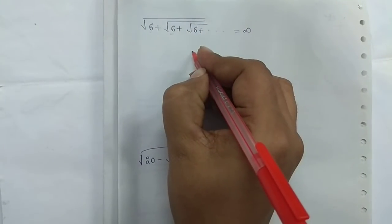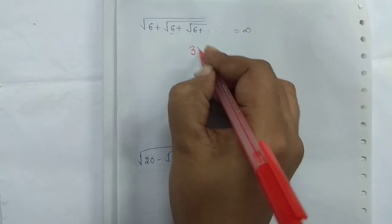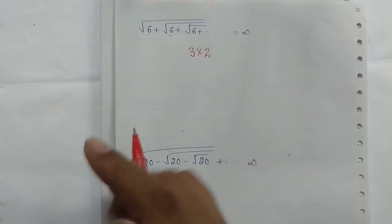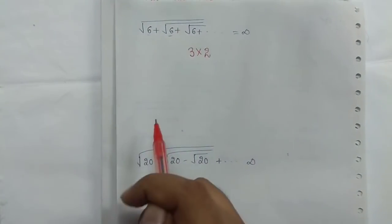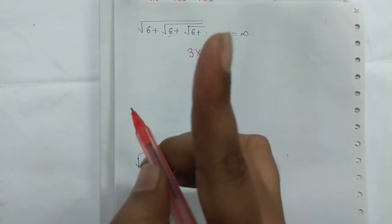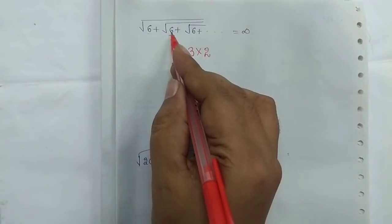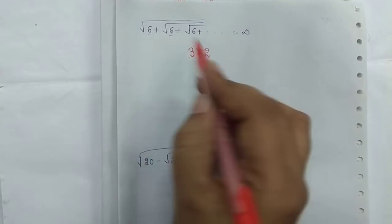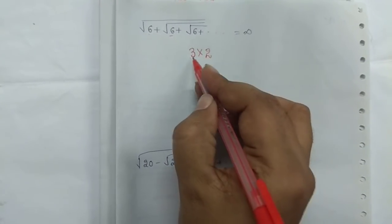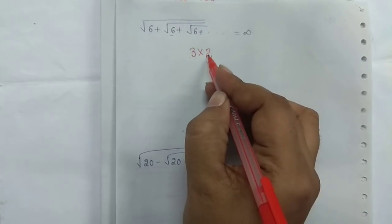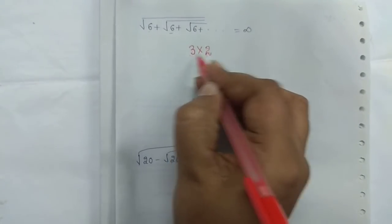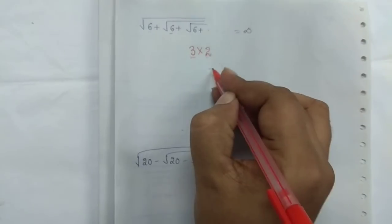We can also identify the answer very easily using factors. The factors of 6 are 3 and 2 — two factors. The factor pair is 3 into 2. The difference between the two factors is 3 minus 2, which is 1. The rule is: use the two factors whose difference is 1. So the larger factor is 3, and the answer is 3.